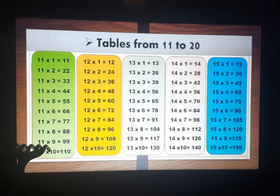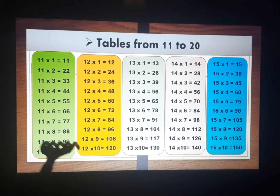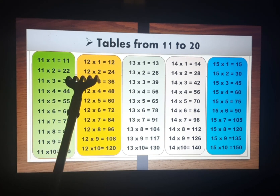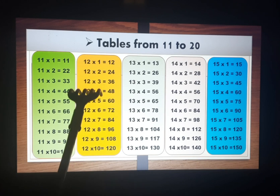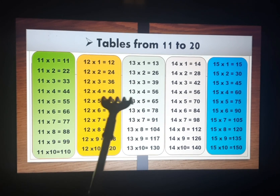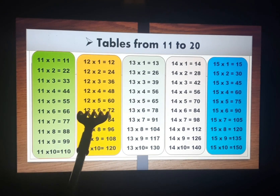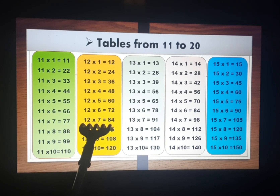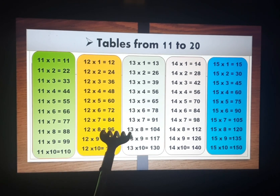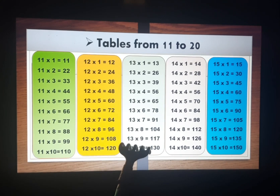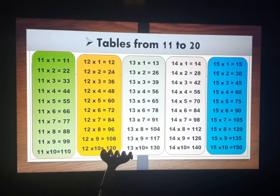11 eights are 88, 11 nines are 99, 11 tens are 110. Now table of 12: 12 ones are 12, 12 twos are 24, 12 threes are 36, 12 fours are 48, 12 fives are 60, 12 sixes are 72, 12 sevens are 84, 12 eights are 96, 12 nines are 108, 12 tens are 120.